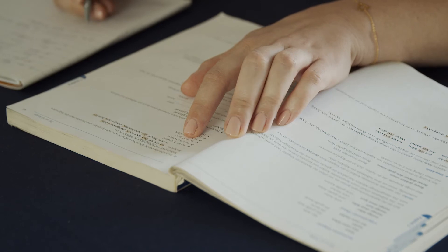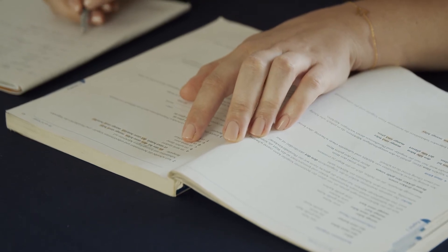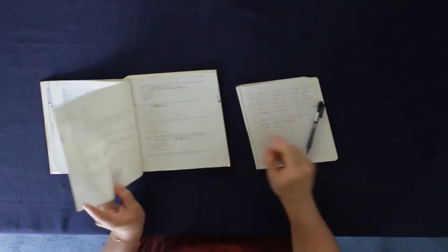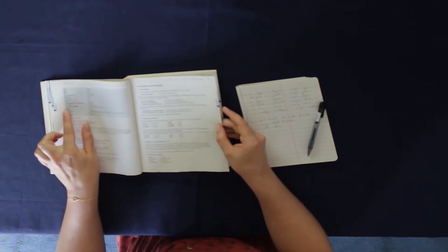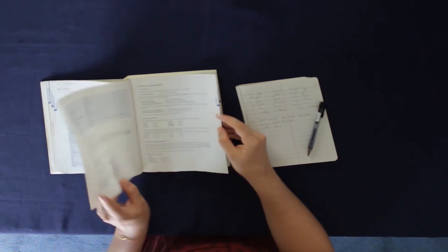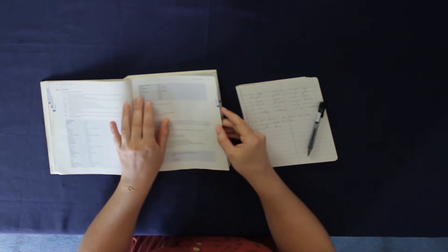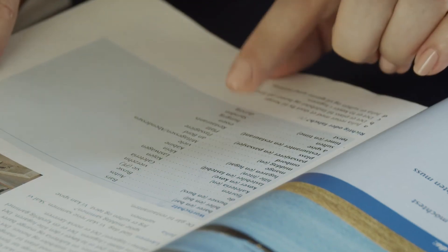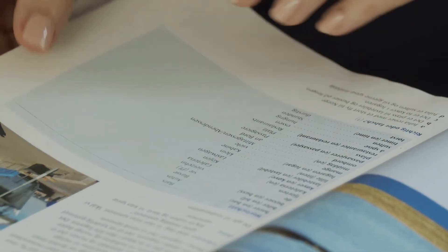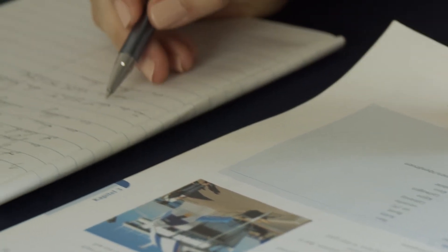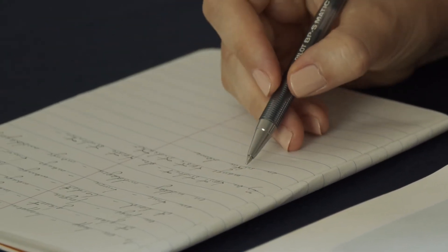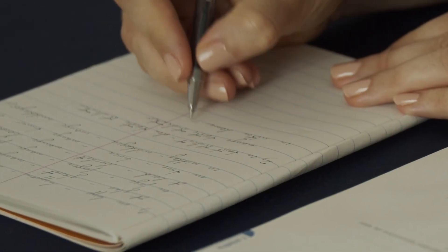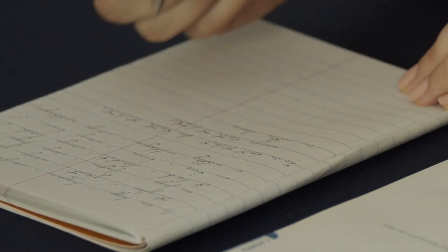And the plural would be mange tørste studenter. Second part, en sulten dame. I'm not sure what sulten means. Let's have a look. It doesn't say here. I'm not seeing it here either. Here, oh, hungry. So tørst is thirsty and sulten is hungry.